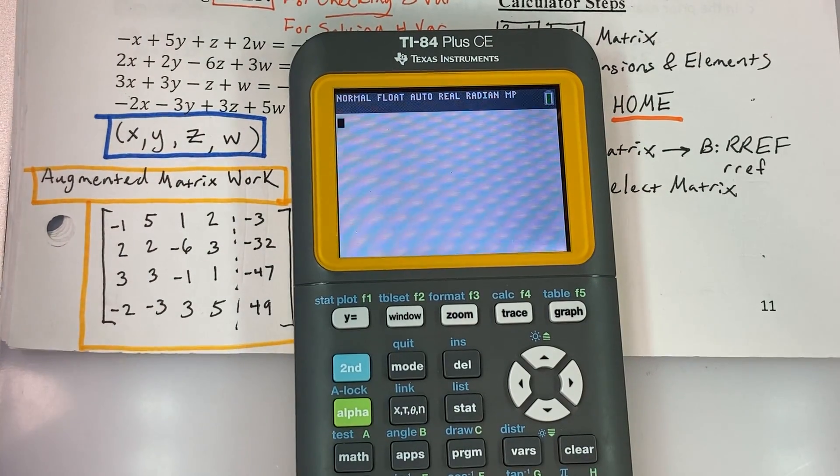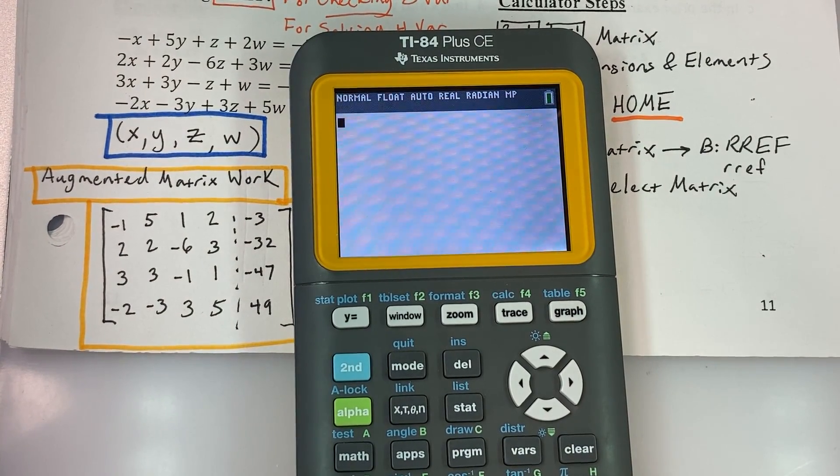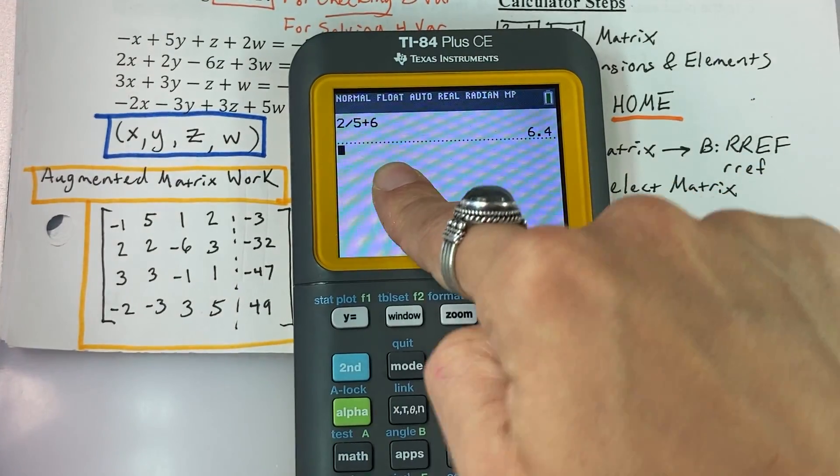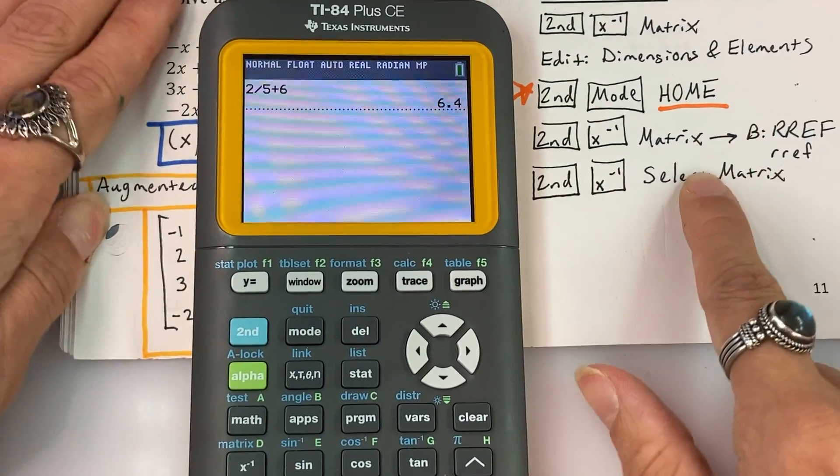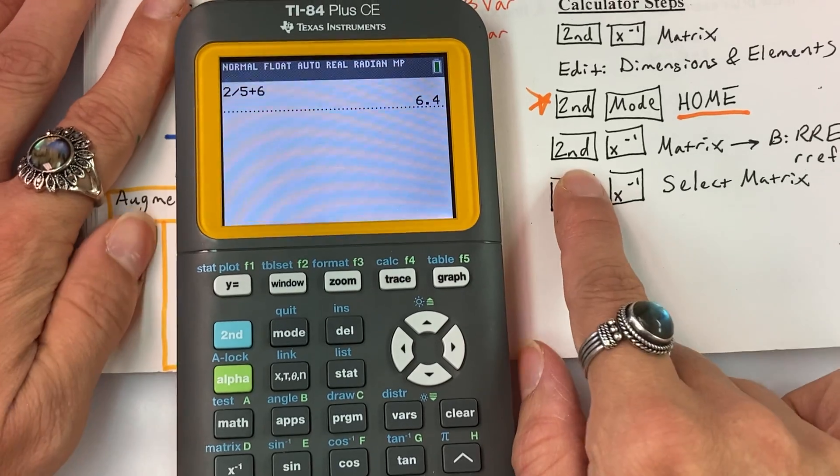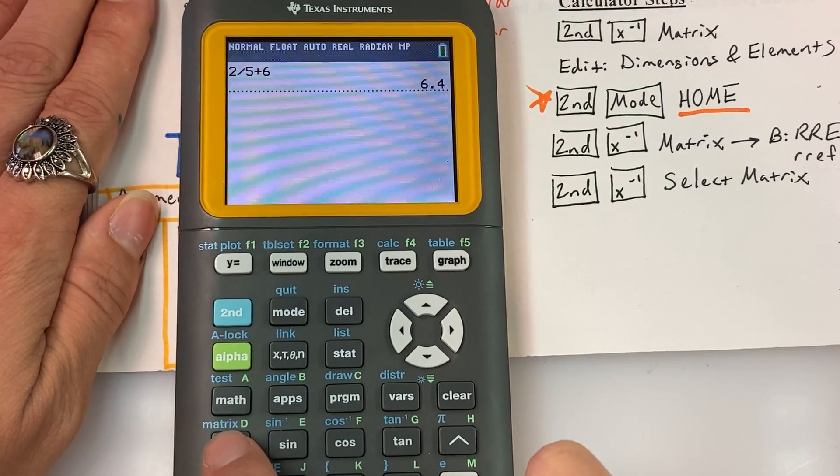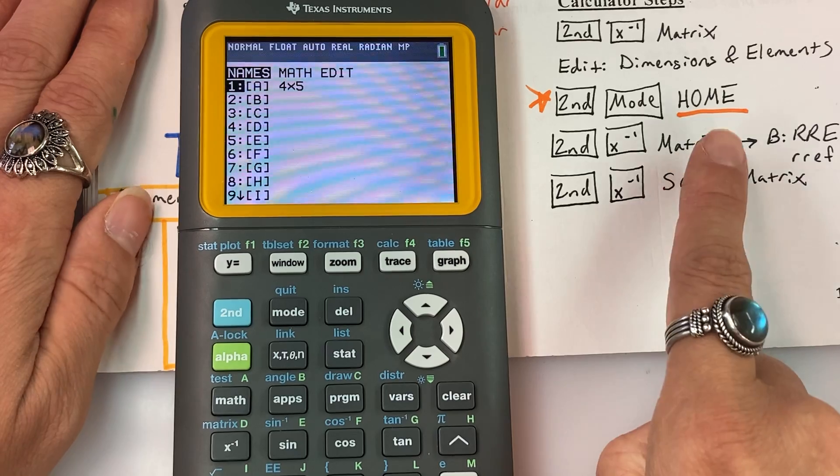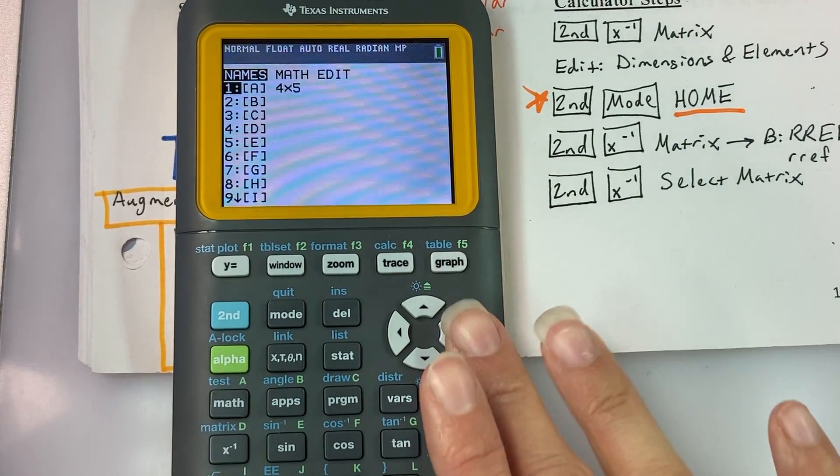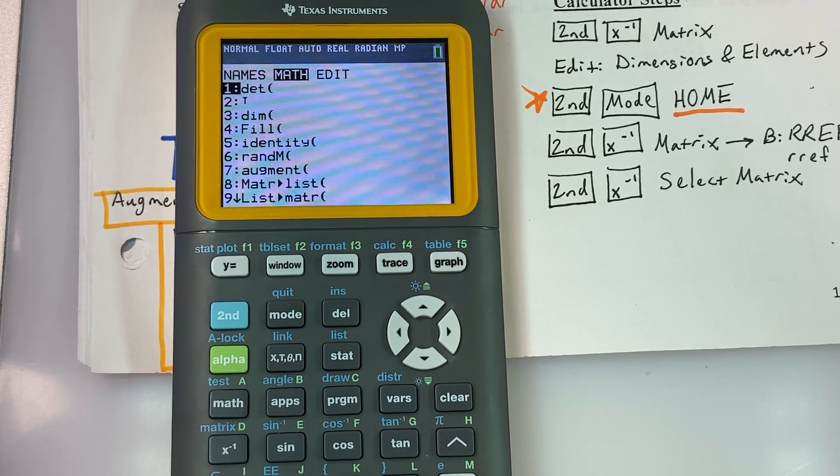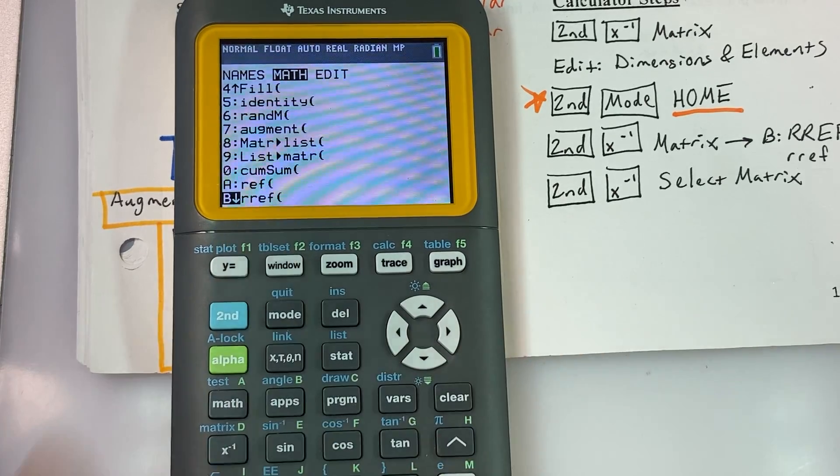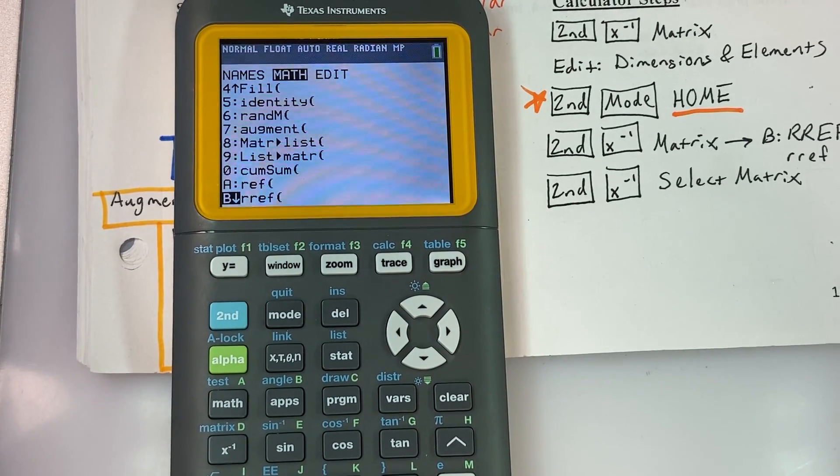So this is where we do that star step. After we have put our matrix in, to actually calculate with our matrix, we need to go back to our home screen. So second mode to quit. And that takes us back to our normal calculation screen. And once we are there, then we're going to go back to the matrix. So you're going to hit second, X to the negative one, and arrow over to math.